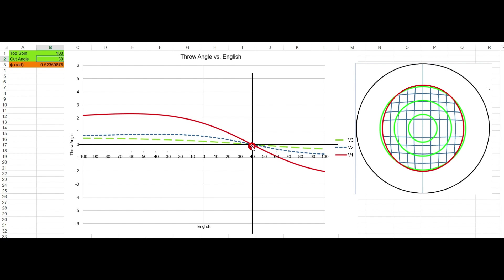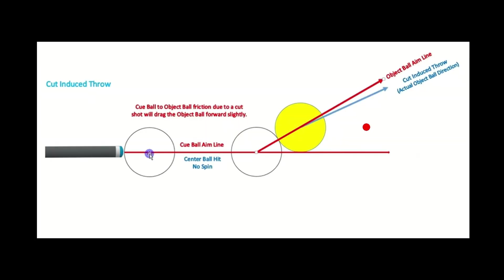Gearing English takes all the guesswork out of playing pool. If you know how to shoot gearing English accurately, you can aim everything at the pocket — it simplifies your life. Anything less than gearing English, including forward roll, you overcut the ball. Anything over gearing English, you aim fat — to the same side as the spin.